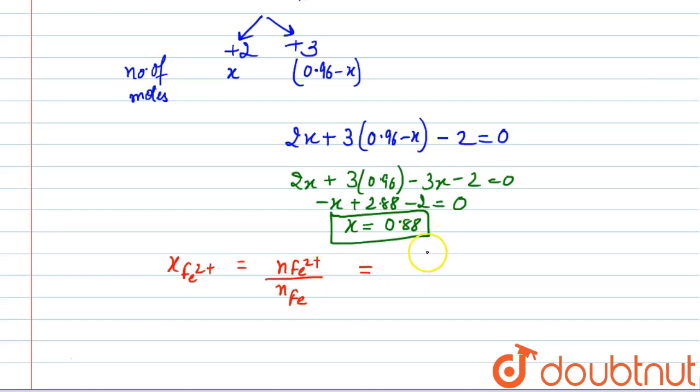So it will be 0.88 and we were given the total number of moles as 0.96. Now the ratio comes as 11 by 12 or we can say 0.91. So this is the mole fraction of Fe2 positive. This is the answer.